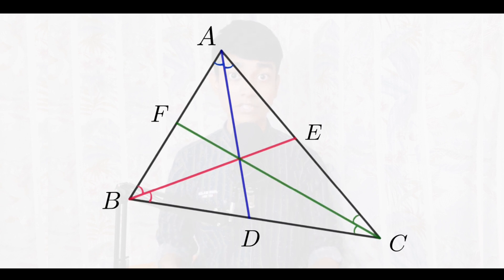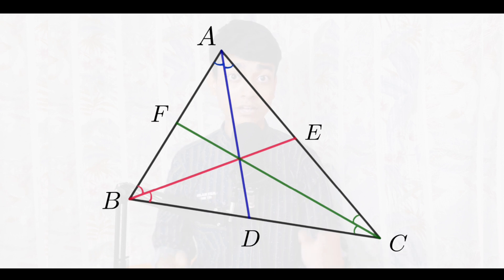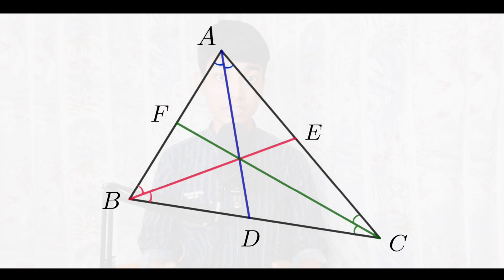Some interesting things are happening here. The first thing you may observe is that the angle bisectors for all three angles meet at a particular point. This happens not only in this triangle but in any triangle you can imagine — whether it's a right angle, acute, or obtuse, or whether it's equilateral, isosceles, or scalene. In any triangle, the angle bisectors for all three angles will meet at a particular point inside the triangle itself.